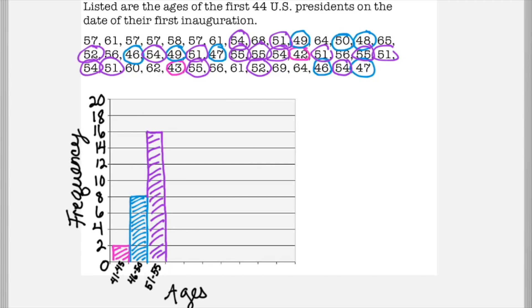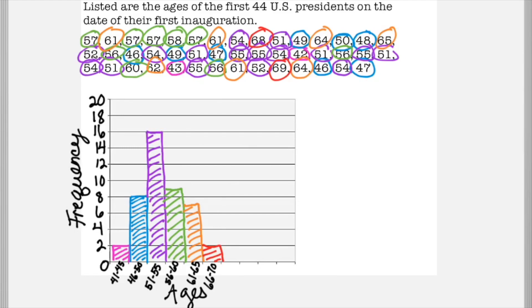And do 56 to 60, that's the green. And then there's also a few more for orange between 61 and 65. And then last, there's only two for the range of 66 to 70.